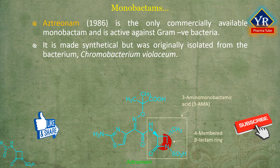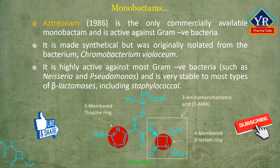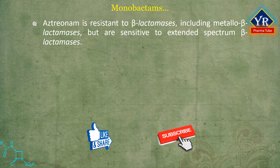The structure of aztreonam possesses a four-membered beta-lactam ring and a five-membered thiazol ring, but this thiazol ring is not fused to the beta-lactam ring. It is highly active against most gram-negative bacteria such as Neisseria and Pseudomonas and is very stable to most types of beta-lactamases including staphylococcal, although it is without effect on the growth or viability of Staphylococcus aureus strains. It is resistant to some beta-lactamases including metallo-beta-lactamases but sensitive to extended spectrum beta-lactamases.